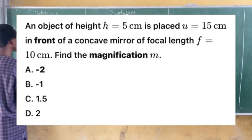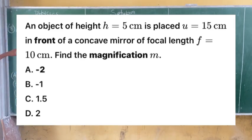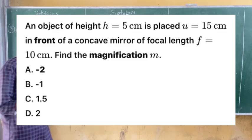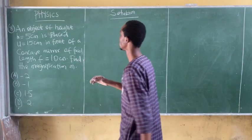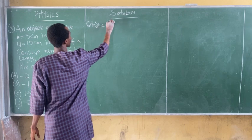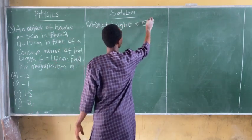Question 8: An object of height 5 cm is placed at a distance of 15 cm in front of a concave mirror of focal length 10 cm. Find the magnification. Option A: minus 2. Option B: minus 1. Option C: 1.5. Option D: 2. From the question, we are given the object height to be 5 cm.